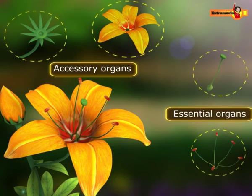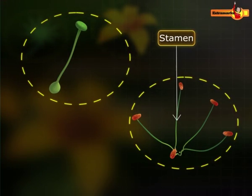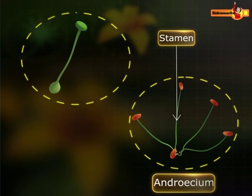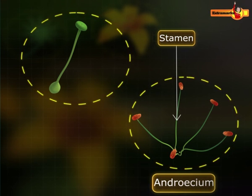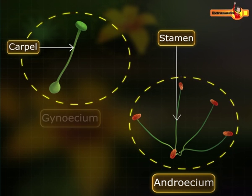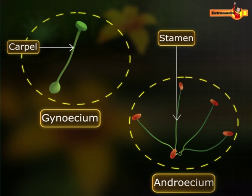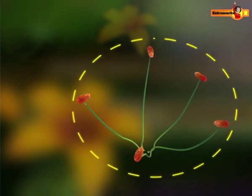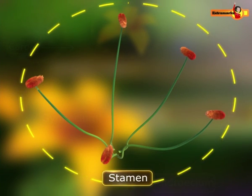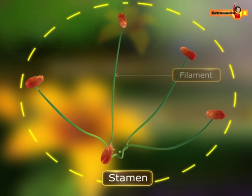The essential organs are stamens or microsporophylls, which form the androecium — that is the male reproductive organ of the flower — and the carpels or megasporophylls, which form the gynoecium — that is the female reproductive organ of the flower. The stamen is a cylindrical, stalk-like structure which consists of a proximal sterile part called the filament and a distal fertile part called the anther.